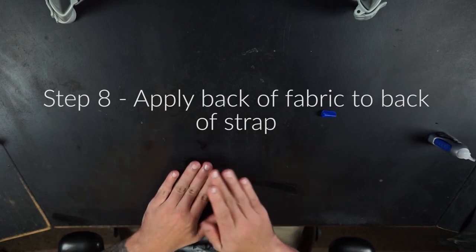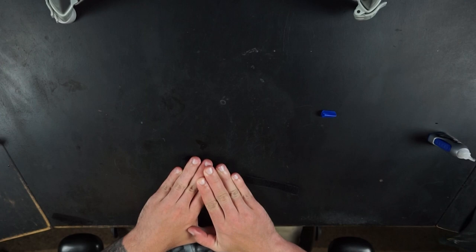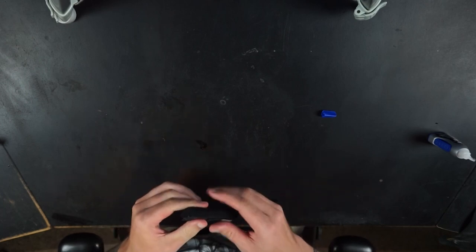Now one super important thing here is you have to make sure that you're super gluing it to the correct side of the strap. In this case for me it's going to be on the same side where the soft velcro is. It might be different for you depending on how yours actually straps in.